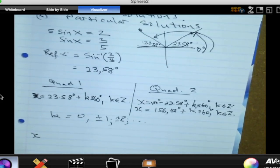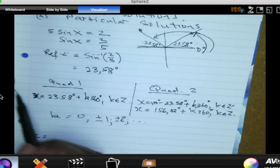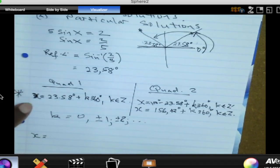So now to get the values of X, I would expand. Let's start with quadrant 1. Let's put K equal to zero in quadrant 1. What answer do we get? 23.58.